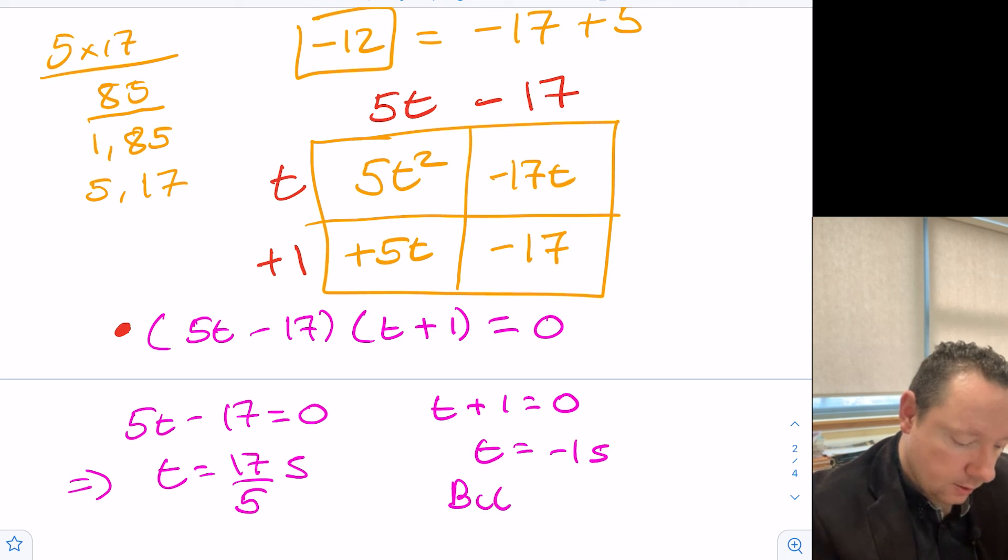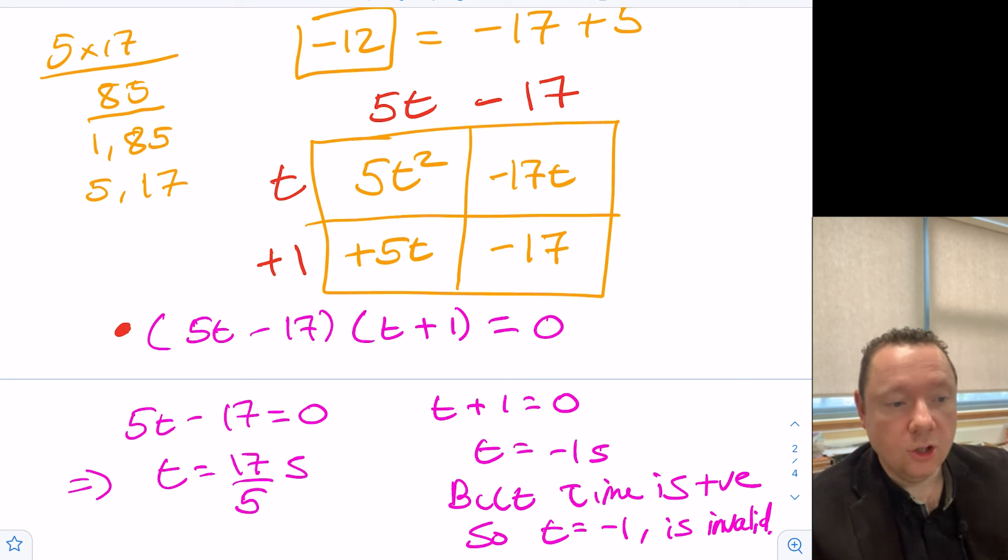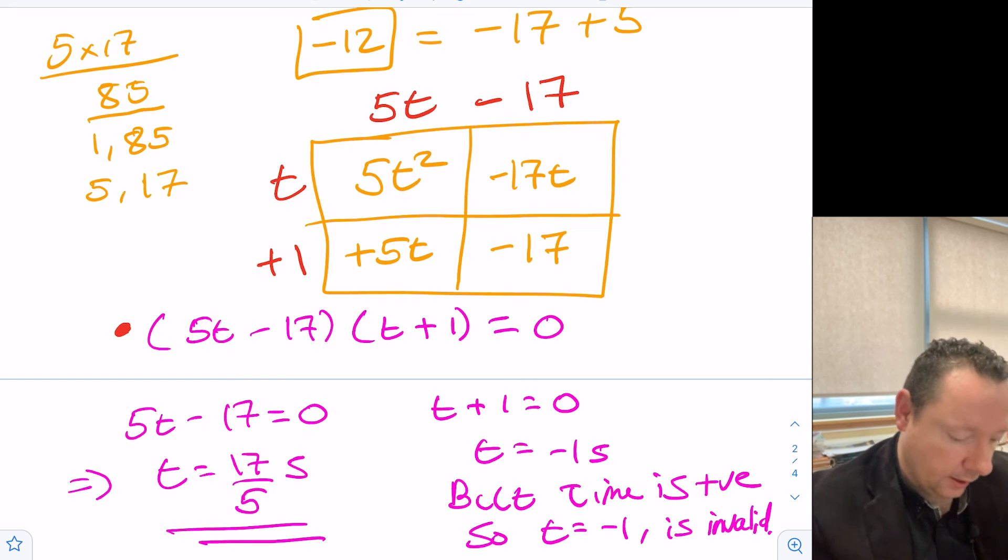But time is positive, so t = -1 is invalid. So there is our final solution: 17/5 seconds is the one we're selecting as our final answer.